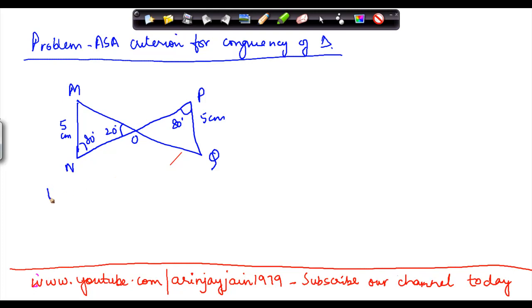The question is prove that triangle M, O, N is congruent to triangle Q, O, P using A, S, A rule.